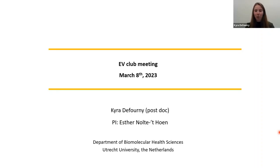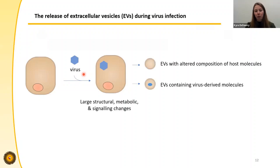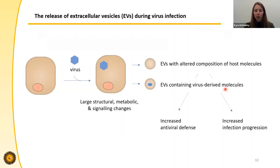Thank you for the introduction. My name is Kira and I'm currently one of Esther's postdocs. One of the primary topics of our research group is the study of extracellular vesicles during virus infection. When a virus infects a cell, this often leads to large structural, metabolic, and signaling changes. This change in cell state can in turn be reflected in the release of EVs with an altered composition of host molecules, and in the case of virus infection, the release of EVs containing virus-derived molecules. Either of these two EV subsets has the potential to either boost antiviral defenses or facilitate infection progression.